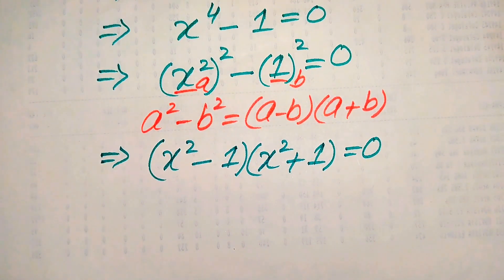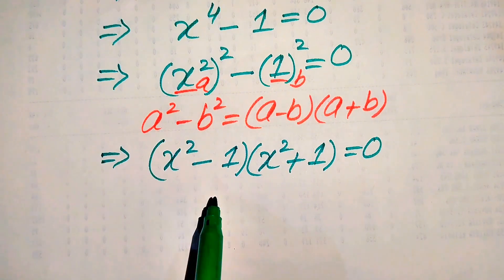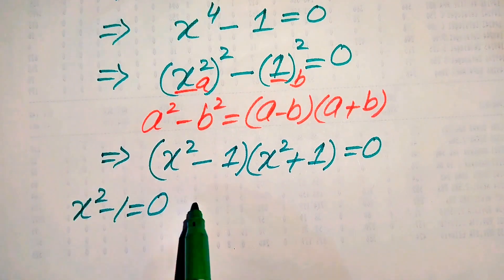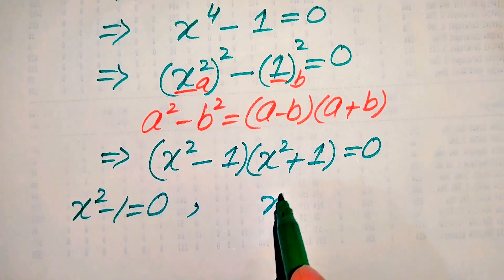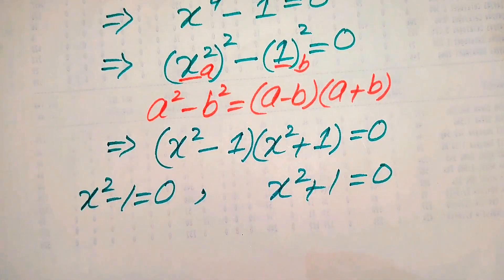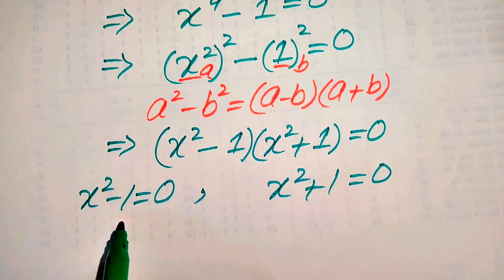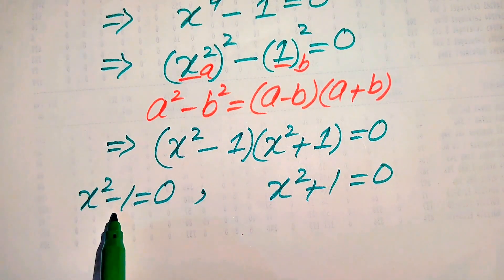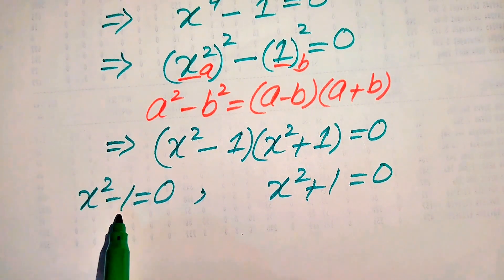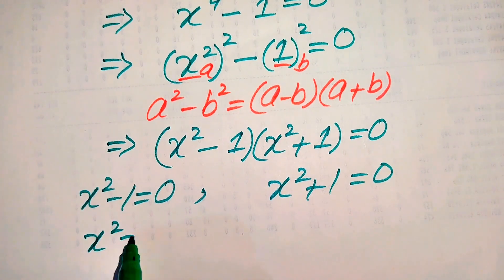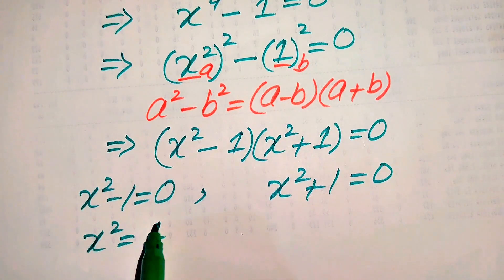Now we break this equation into two parts. The first part is x squared minus one equals zero, and the second is x squared plus one equals zero. From the first case we can easily get the values of x — either by factoring again using the same formula, or by taking the square root on both sides.